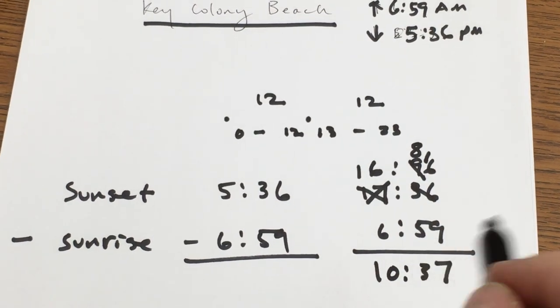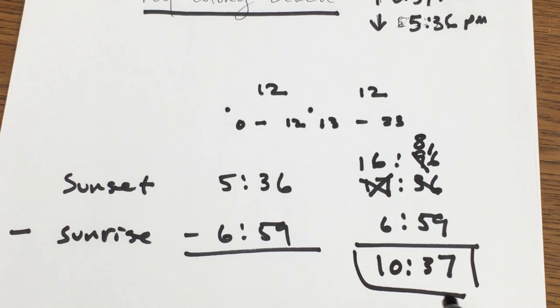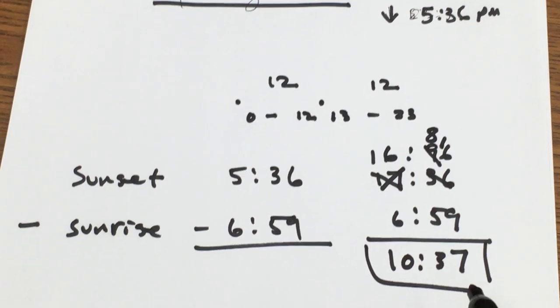So for Key Colony Beach, we get 10 hours and 37 minutes of daylight. Good stuff.